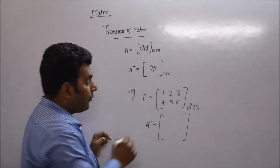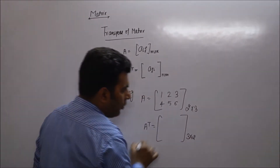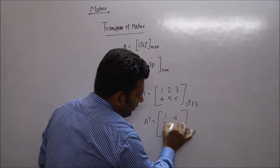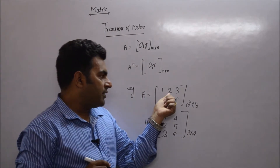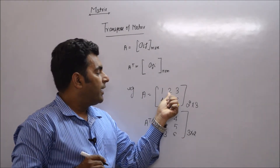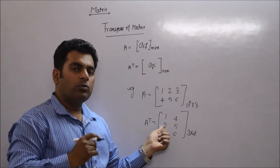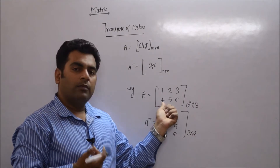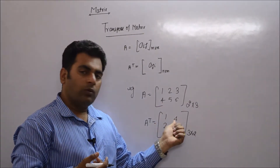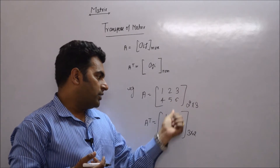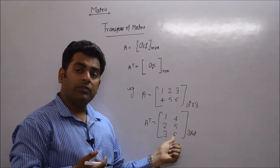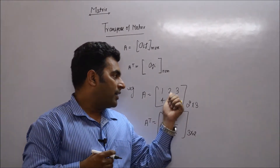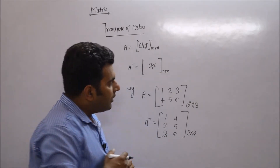The transpose is obtained by converting the first row into the first column and the second row into the second column. The element at position (1,2) is shifted to position (2,1). Similarly, position (1,3) goes to (3,1), position (2,3) goes to (3,2), and so on. So the transpose of a matrix is obtained by converting rows into columns.